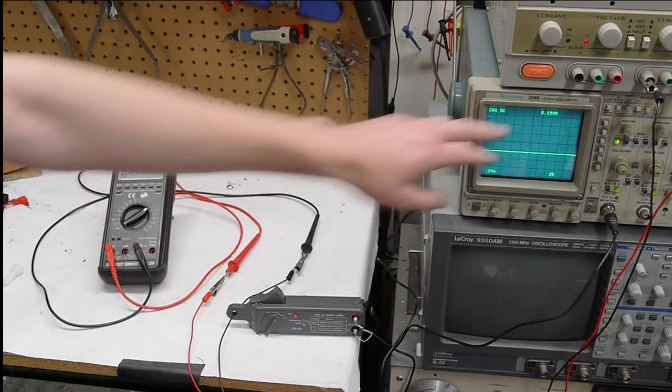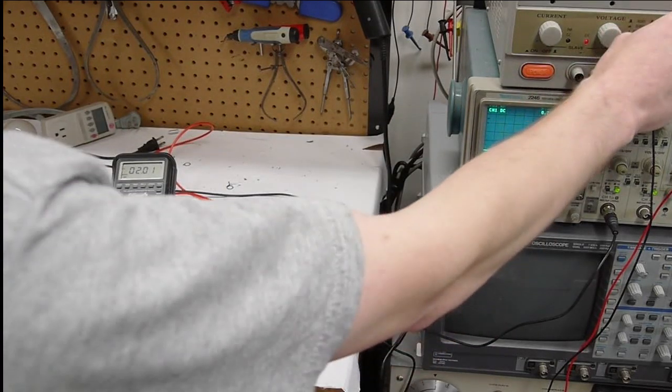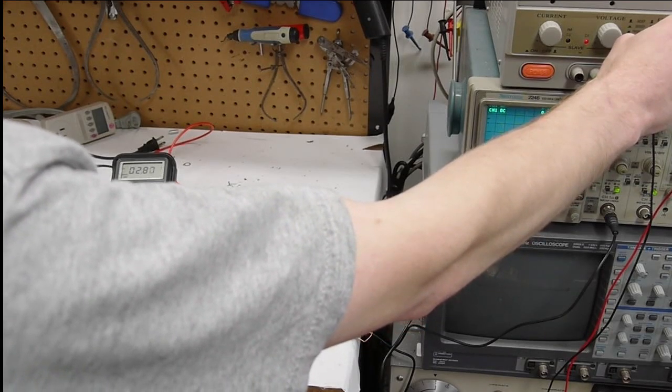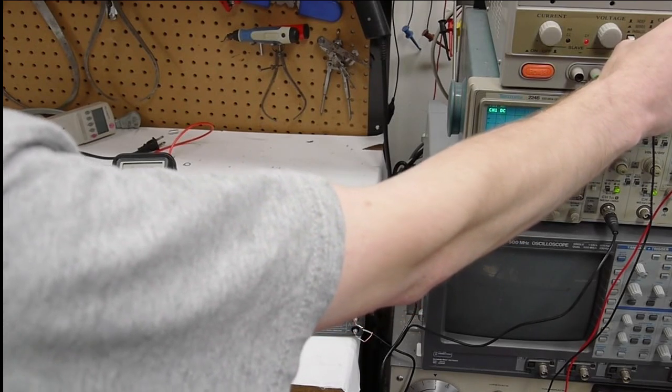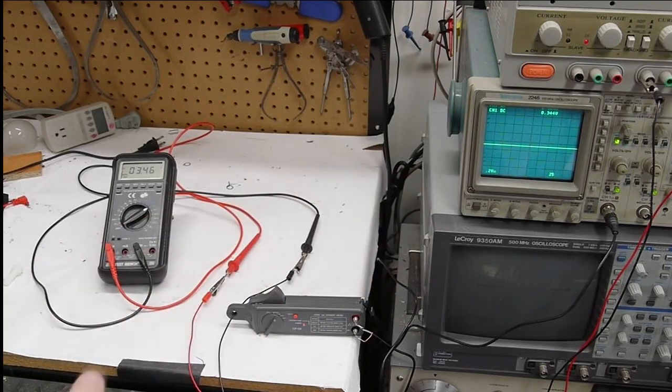Okay, about 2 amps here, 0.2 of a volt there, looks good. I'm actually not using a load resistor. Basically the load resistor is the meter itself, and the power supply is only putting out half a volt. There's very little power dissipation.